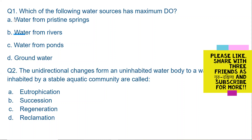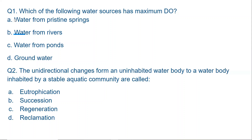The oxygen from the atmosphere is constantly being dissolved in pristine spring water. The spring water flows very quickly and that's why oxygen from the atmosphere is dissolved into the water. So the correct answer is A — pristine springs have maximum dissolved oxygen.